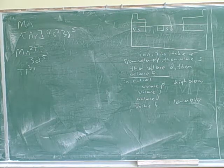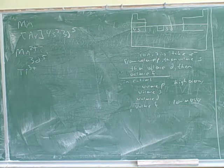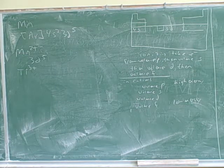How many valence electrons does titanium have? Four. Right. And how many are we taking away? Three. Okay.